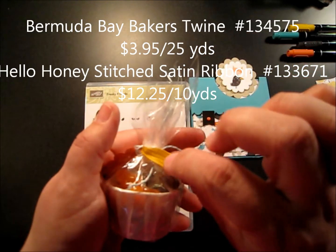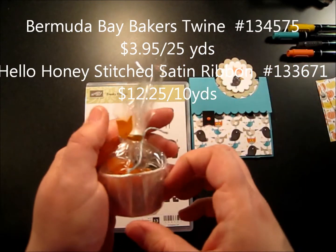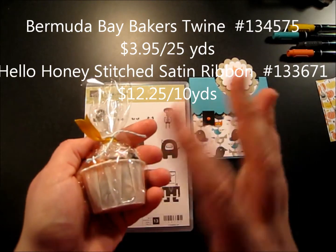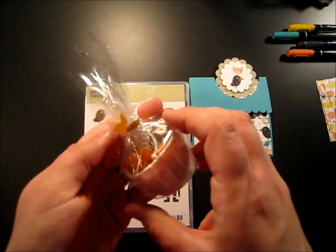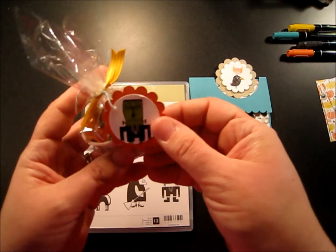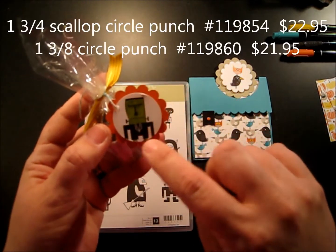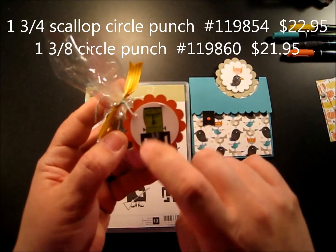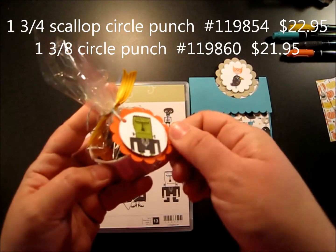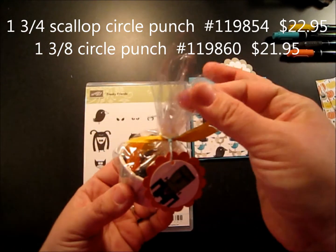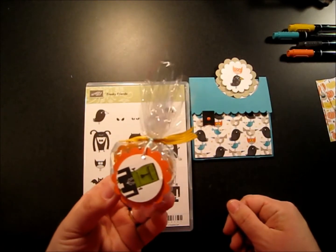I tied it with some of the Baker's twine, the Bermuda Bay, and then that's the hello honey, but it's close enough for the crushed curry that it gives the same look. Then we used our scallop circle and our Freaky Friends stamp set, the scallop circle and then the circle punch that fits inside it, to make a little tag for it.